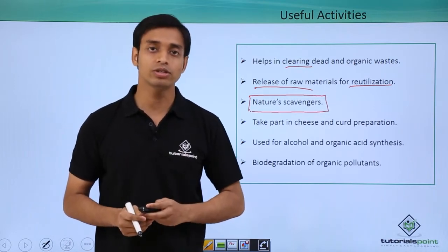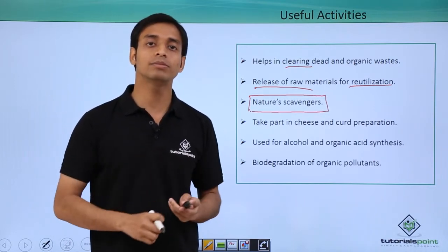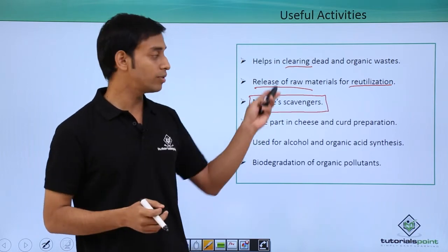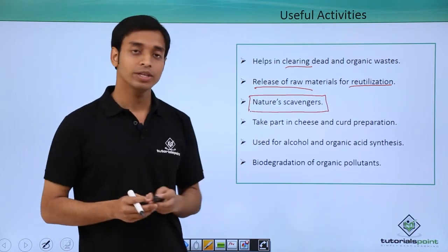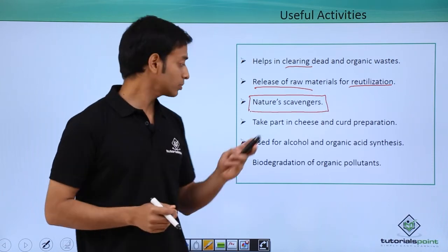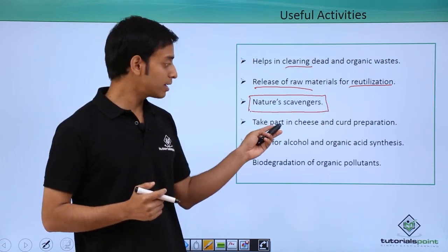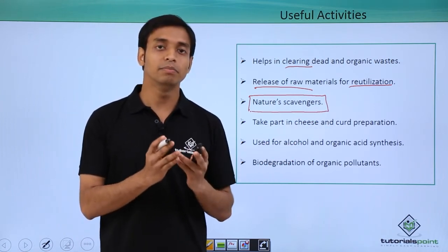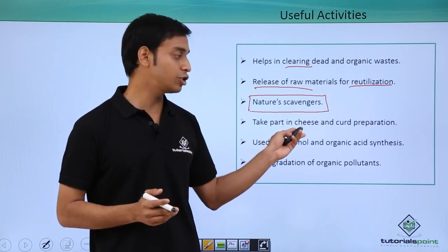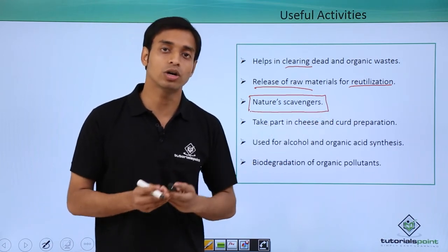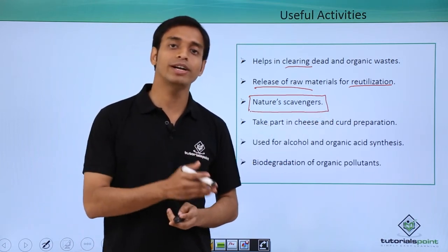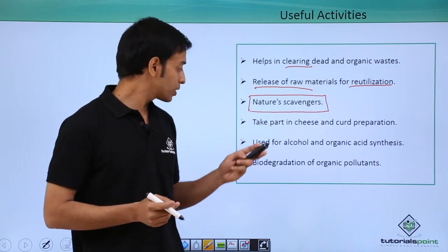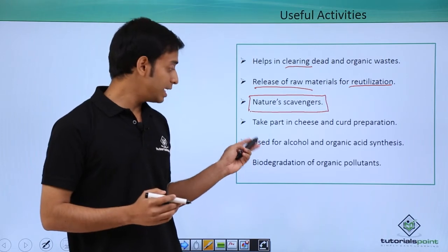Saprophytic bacteria are known as nature's scavengers because they help in cleaning dead and decaying organic matter from plants and animals. They also importantly take part in the forming of cheese, curd, and yogurt — helping in converting milk into these products which we use every day.